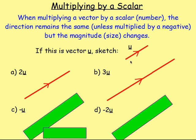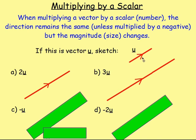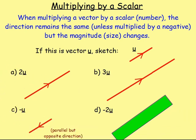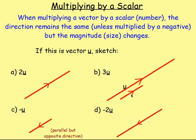For negative U, that's the same size but the opposite direction — you just flip the arrow, so instead of going up, it comes down. It will be parallel but heading in the opposite direction. For negative 2U, the negative puts it in the opposite direction and the 2 doubles the length. So you end up with the same as 2U but with the arrow pointing the other way.